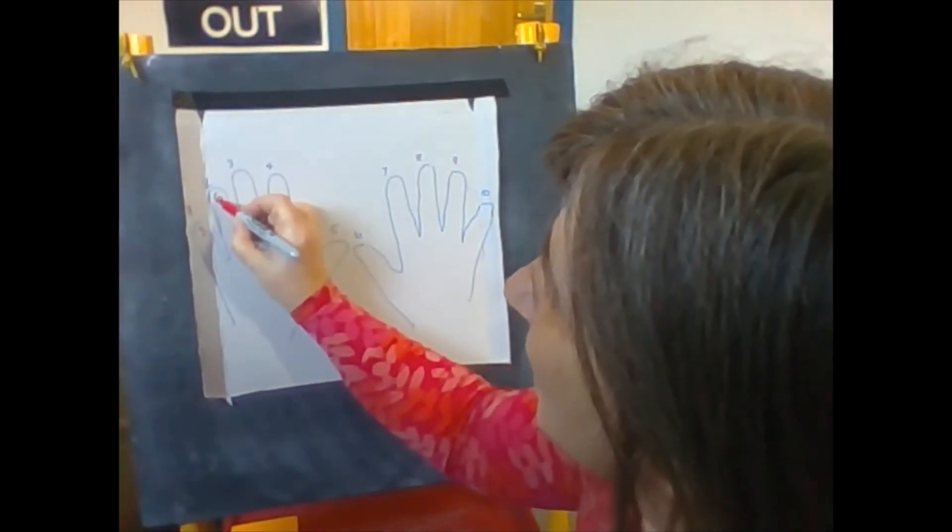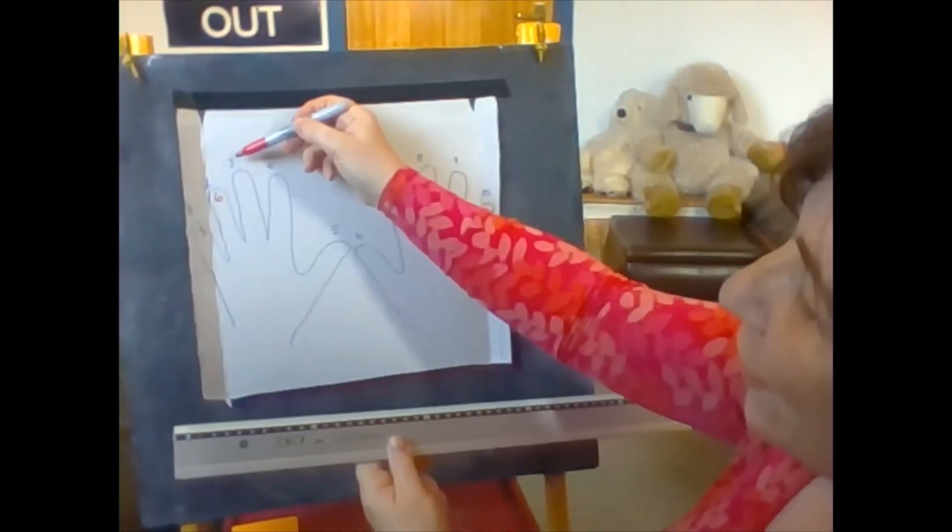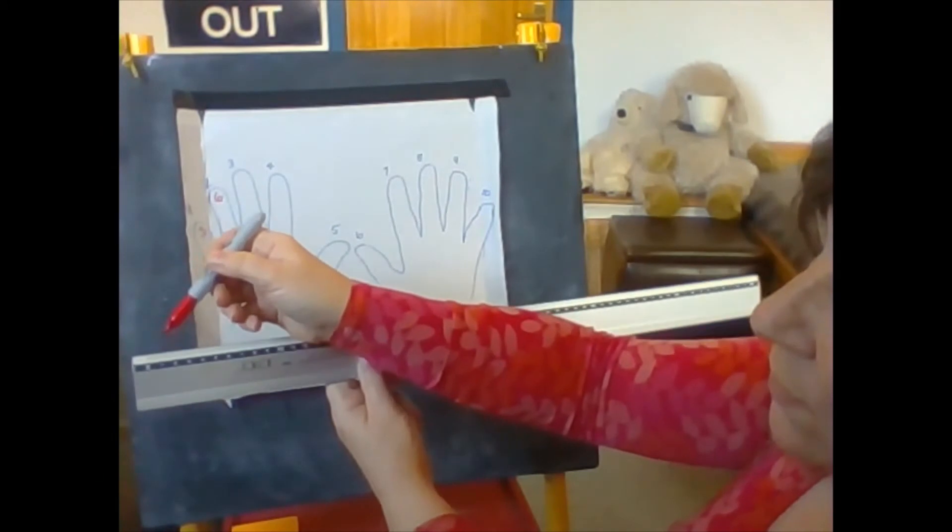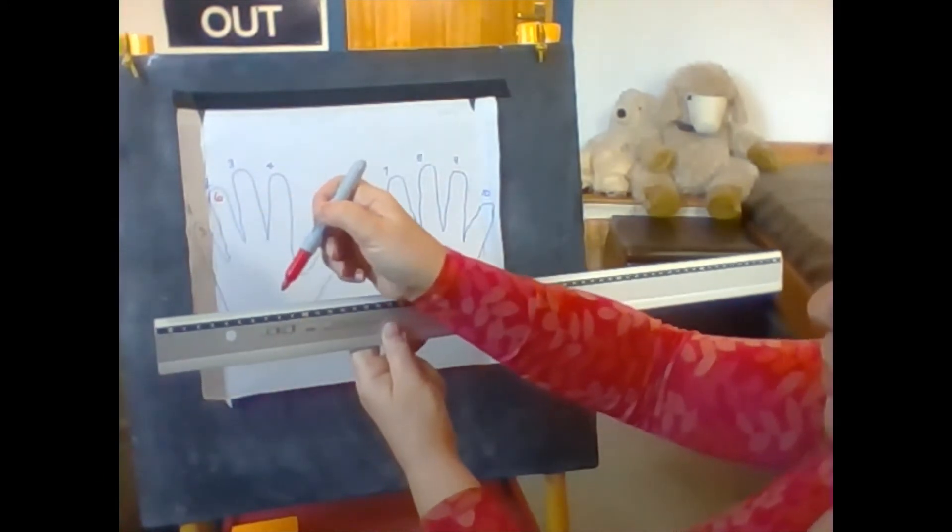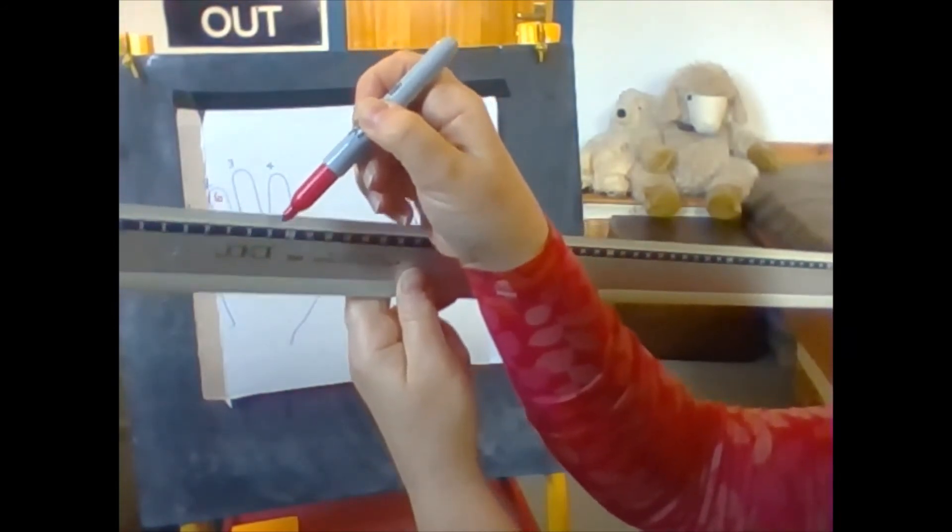And can you guess what we're doing next? We're going to do three skips along. So start on zero, one, two, three, where are we now? On number nine.